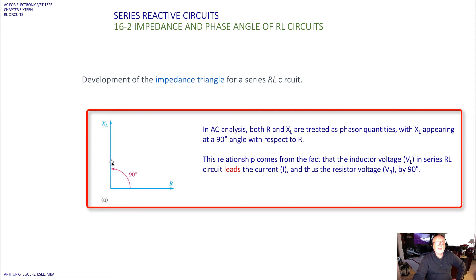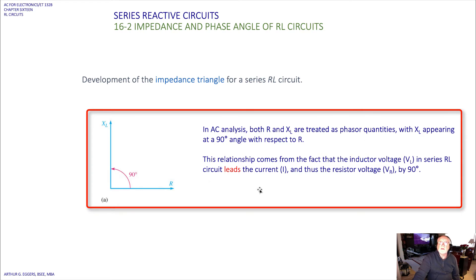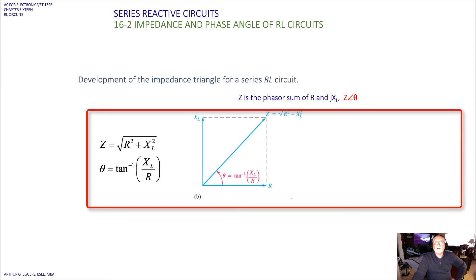We start off with that 90-degree phase difference. In AC analysis, both R and XL are treated as phasor quantities, with XL appearing at a 90-degree angle with respect to the resistor. This comes from the fact that the inductor voltage VL in a series RL circuit leads the current I.